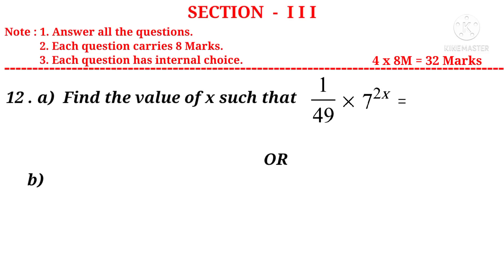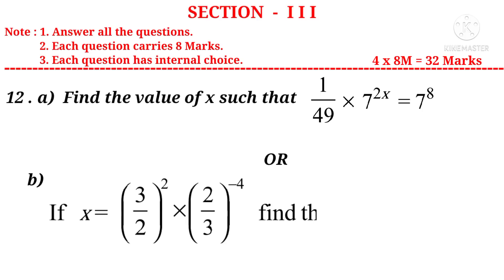Twelfth problem A: Find the value of x such that 1 by 49 into 7 power 2x is equal to 7 power 8. Or 12B: If x equals 3 by 2 whole squared into 2 by 3 whole power minus 4, find the value of x power minus 2. Both questions are from Chapter 4, Exponents and Powers.